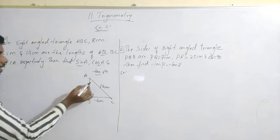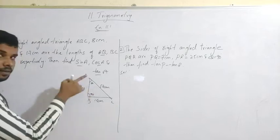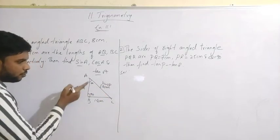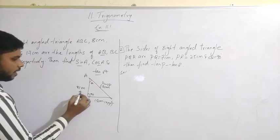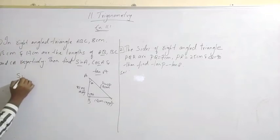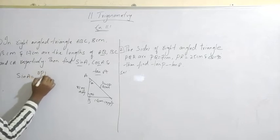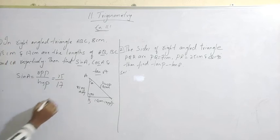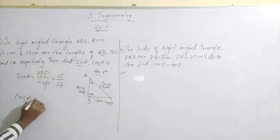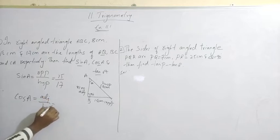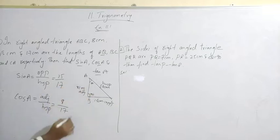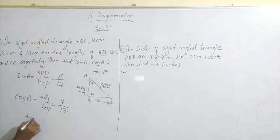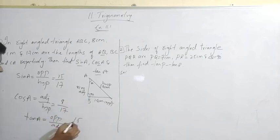The angle given is A. The longest side is the hypotenuse, the side opposite to the angle is the opposite side, and this is the adjacent side. Now we can easily find sin A. The formula for sin A is opposite by hypotenuse, so opposite is 15 and hypotenuse is 17. Similarly, cos A is adjacent by hypotenuse: adjacent is 8, hypotenuse is 17. And tan A is opposite by adjacent, which is 15 by 8.